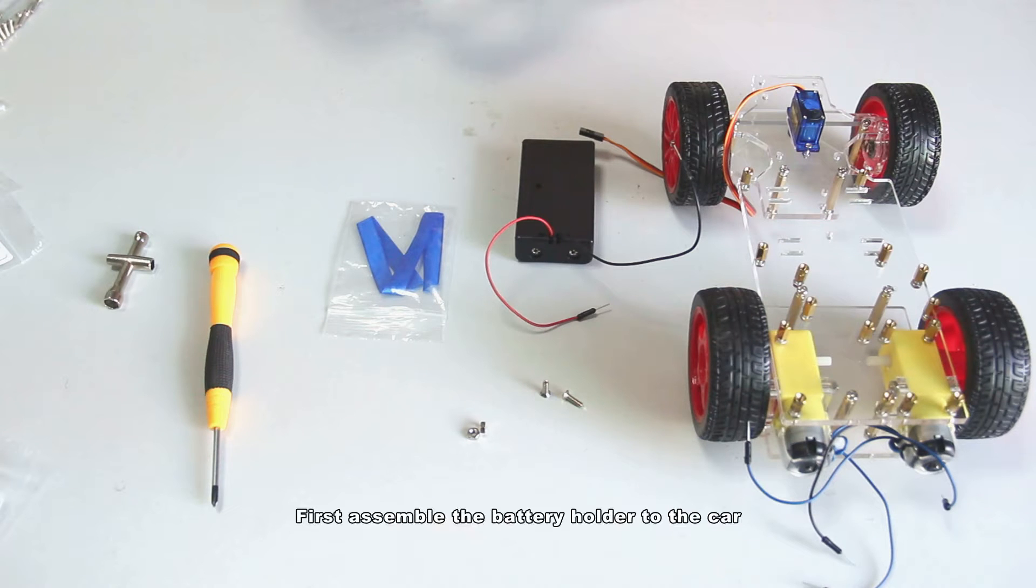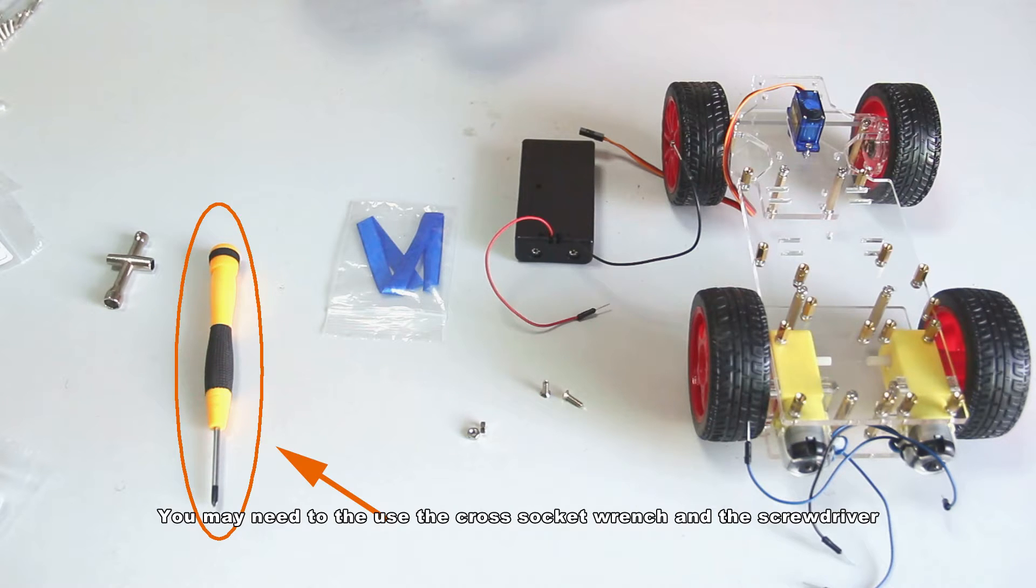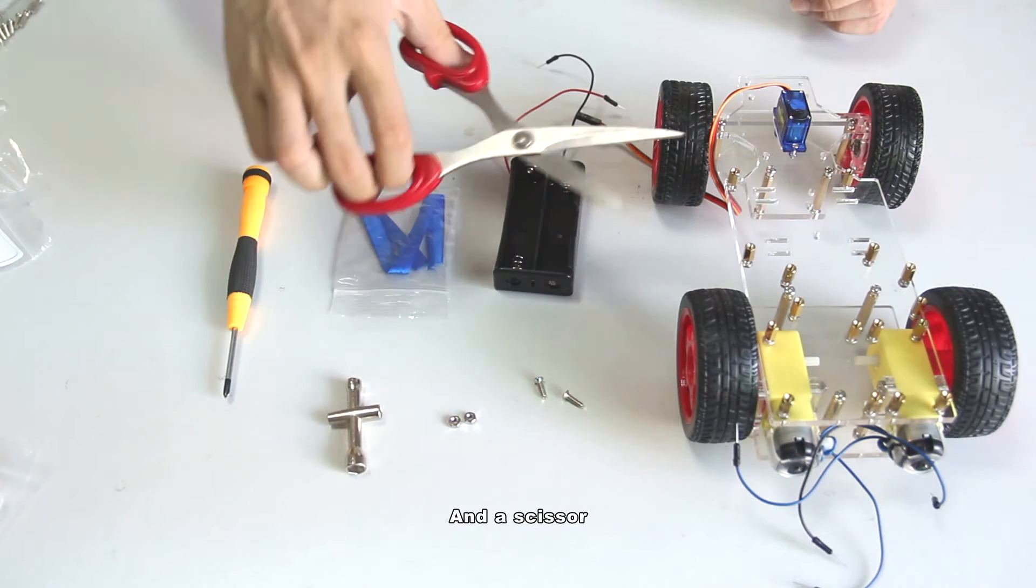First assemble the battery holder to the car. Take out the battery holder, the ribbon, two M3 x 10 countersunk screws and the two M3 nuts. You may need to use the cross socket wrench and the screwdriver and a scissor.